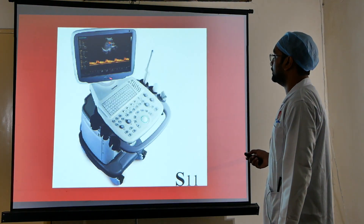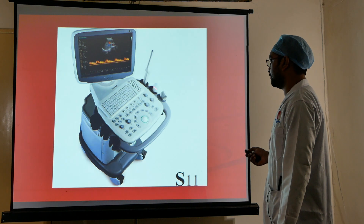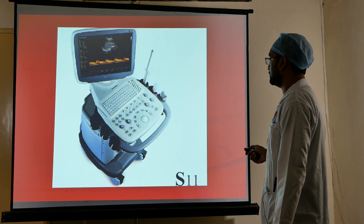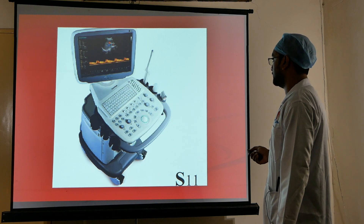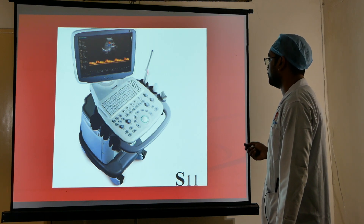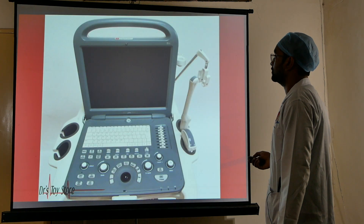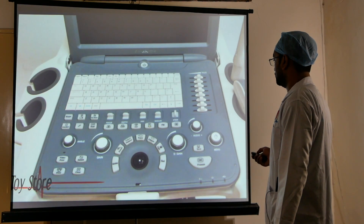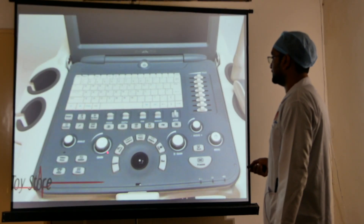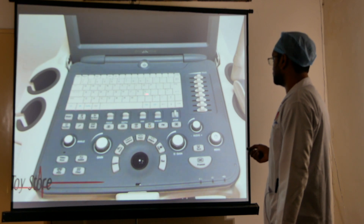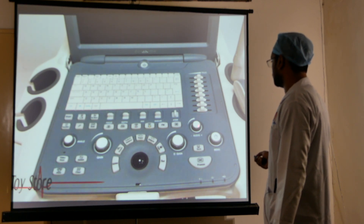A typical ultrasound machine consists of a monitor, a console, and stations for the probes. The probes include the linear probe, the curvilinear probe, and the pencil-type probe used for cardiac echo. Controls on the machine include a gain button, a depth button, a keyboard for typing, and an audio control.